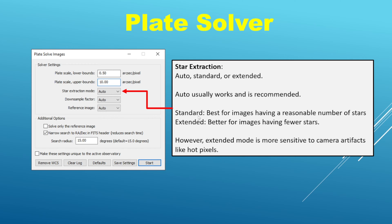The way this works is: star extraction, for example, used to just be standard or extended — well, now you have an auto mode, and that will usually work and is recommended. Standard mode was for images having a reasonable number of stars, and extended was for images with a few stars. The question was what constitutes a reasonable number versus a few. I've looked at a large number of images and dialed in on a threshold that works well almost all the time, so auto mode applies that knowledge for you. You can still manually select standard or extended if you prefer.